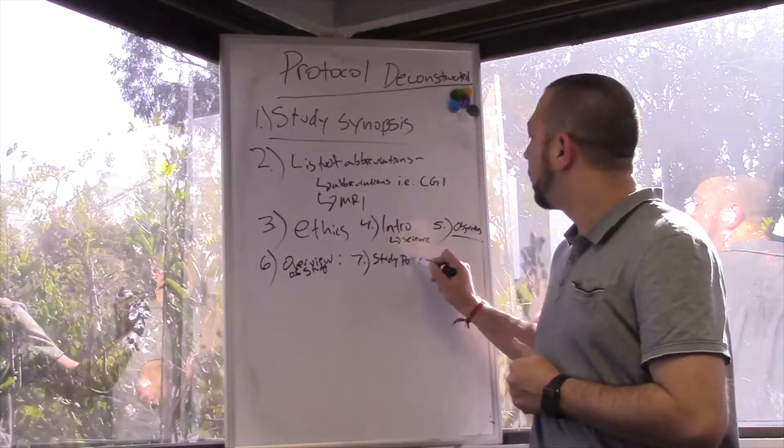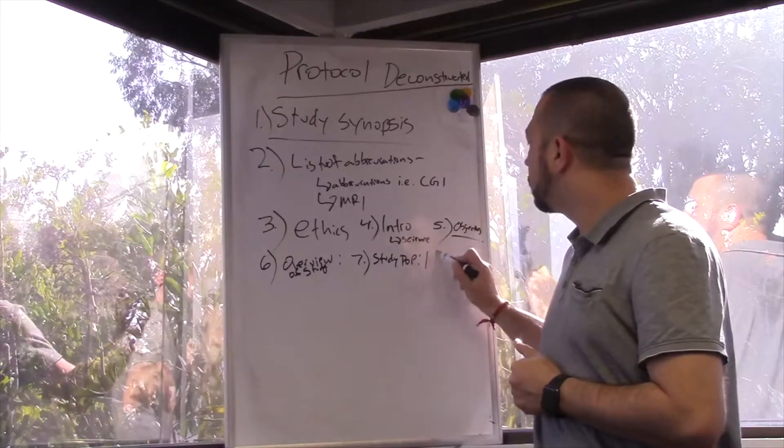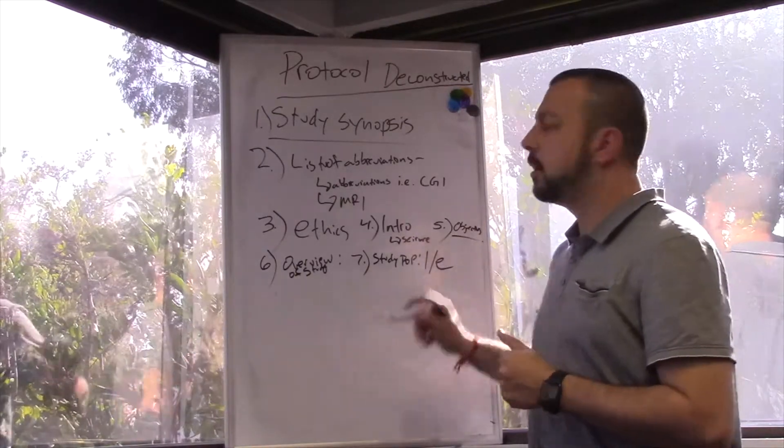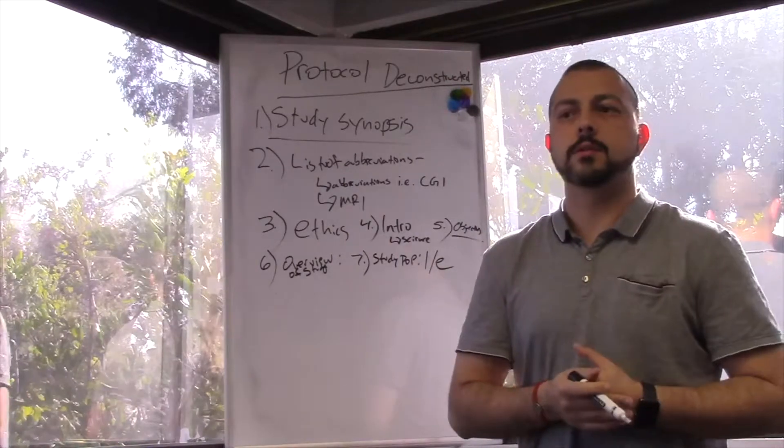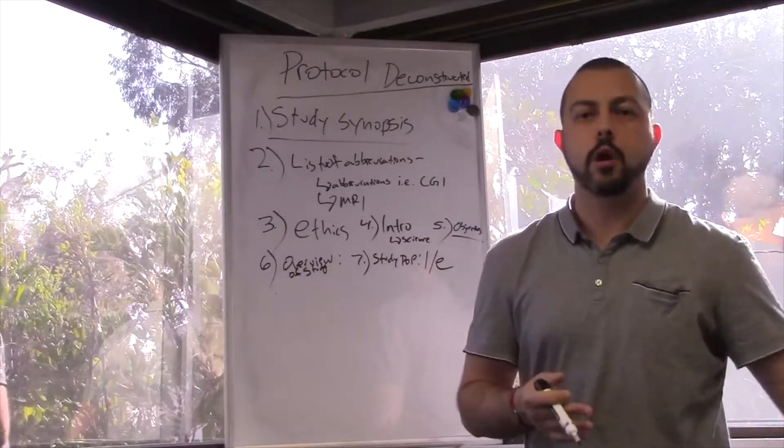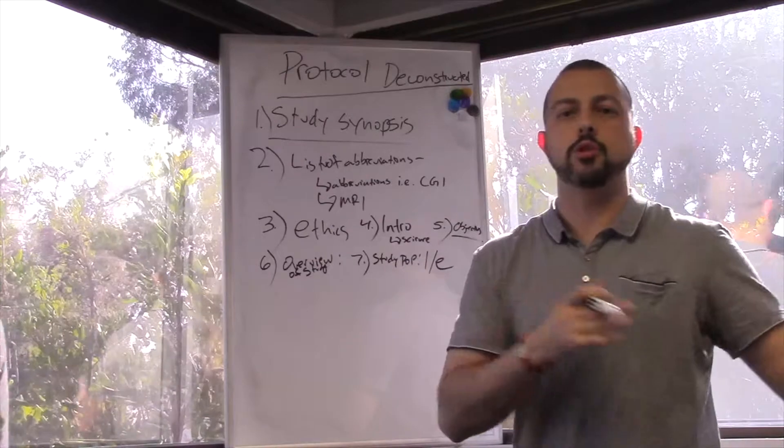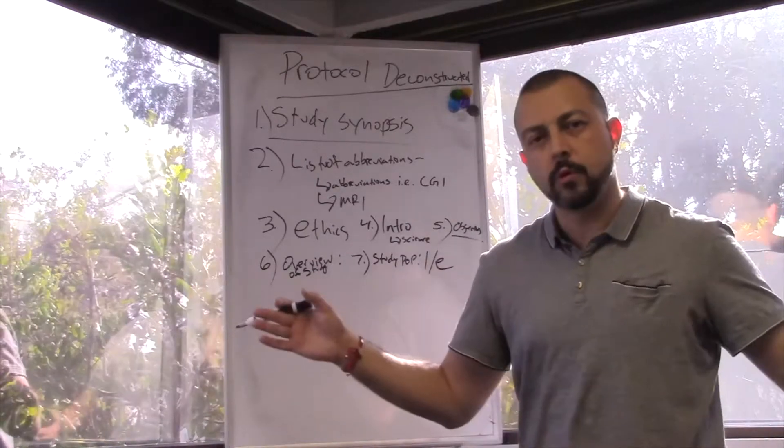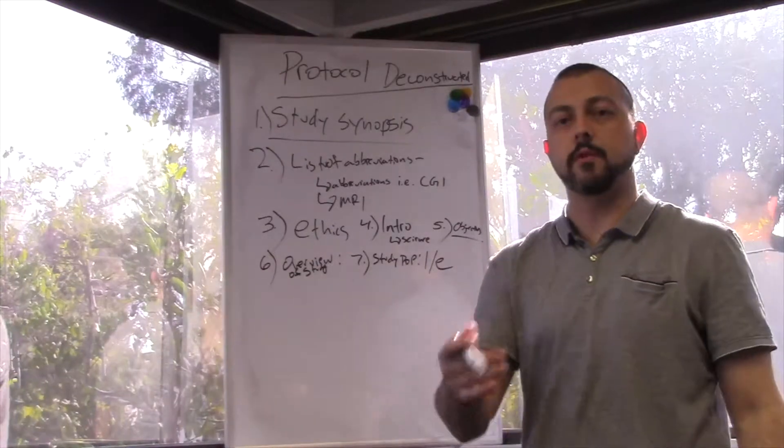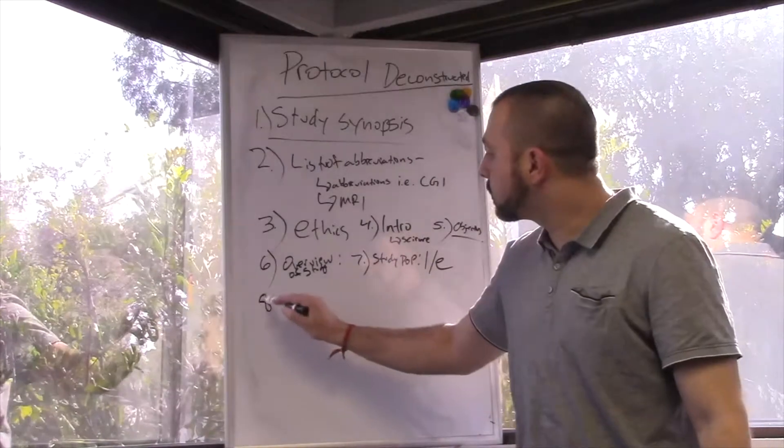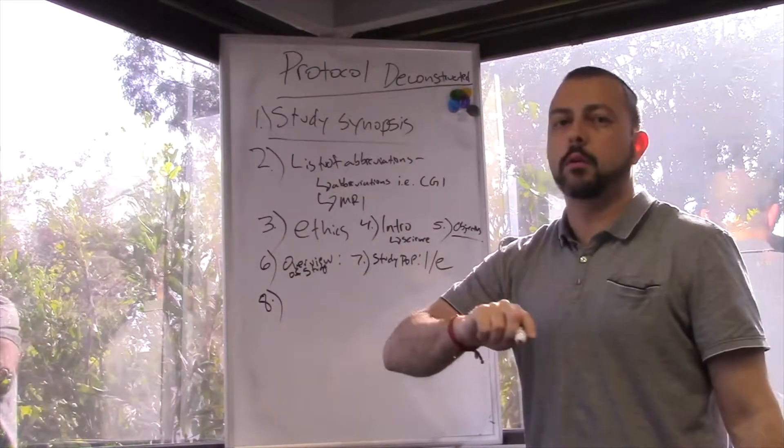Next, study population, and this includes the inclusion-exclusion criteria. So that would be important. You got the IE criteria. It basically tells you who's qualified to do the study, who's not, who they're targeting, who should be included, who should be excluded. You want to learn more, go to the podcast, there's other videos on it as well.